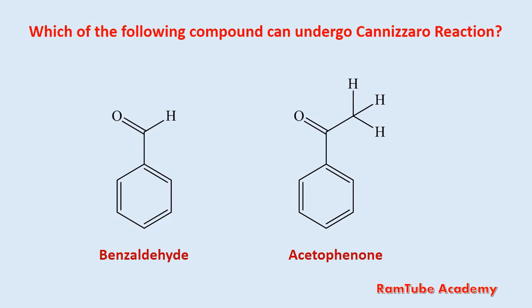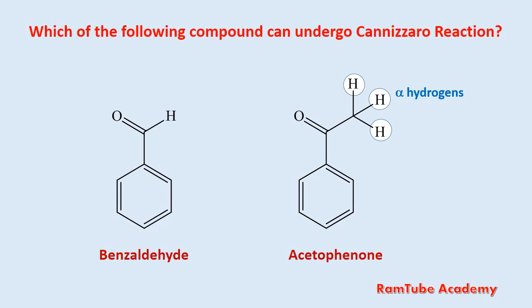Here we have two compounds — benzaldehyde and acetophenone. In the case of benzaldehyde, this carbon is directly attached with the carbonyl. In the case of acetophenone, these two carbons are directly attached with the carbonyl, and hence they are alpha carbons. By definition, a hydrogen atom attached to an alpha carbon atom is called an alpha hydrogen. In benzaldehyde there is no alpha hydrogen or alpha carbon, whereas in acetophenone there are three alpha hydrogens.